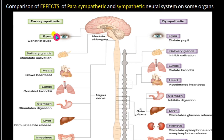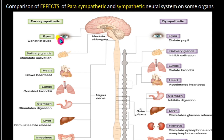During parasympathetic impulse, the pupil will be constricted, so only a lesser amount of light enters. The body is in the resting stage, so the pupils will constrict.